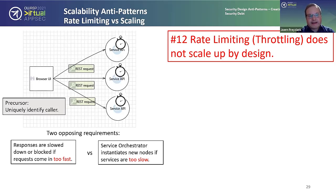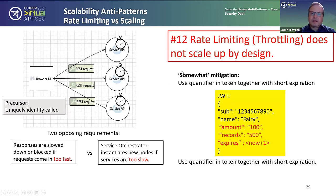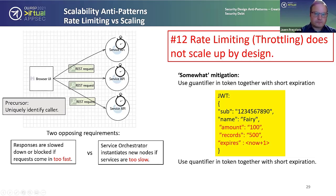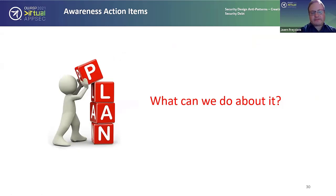Rate limiting and throttling do not scale up by design — though this becomes more absolute the more you fail your precursor of uniquely identifying your caller. For example: people commuting to work all using the same exit IP address — you think you've uniquely identified your caller but you haven't. You'd end up punishing everyone from the same network checking their stock quotes on the train's public WiFi. A somewhat better mitigation is to use a quantifier in your token — instead of throttling, give them a token with an encoded amount like '100 queries' or '500 records,' that expires very fast.